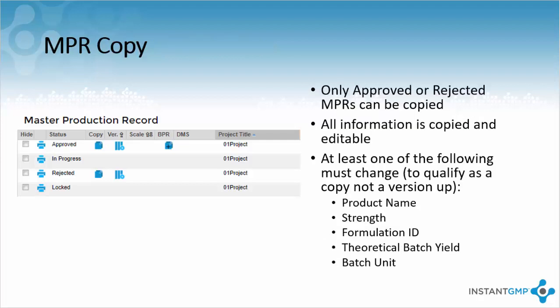After an NPR has been completed and approved or rejected, that NPR can undergo multiple changes. Copying an NPR means you are making a carbon copy of the NPR; however, you can change the product produced, strength, manufacturing step, bill of materials, etc. This is useful if you are producing similar products that are named differently or if it is the same product of a different strength. This streamlines the creation process if you are a site with multiple products.